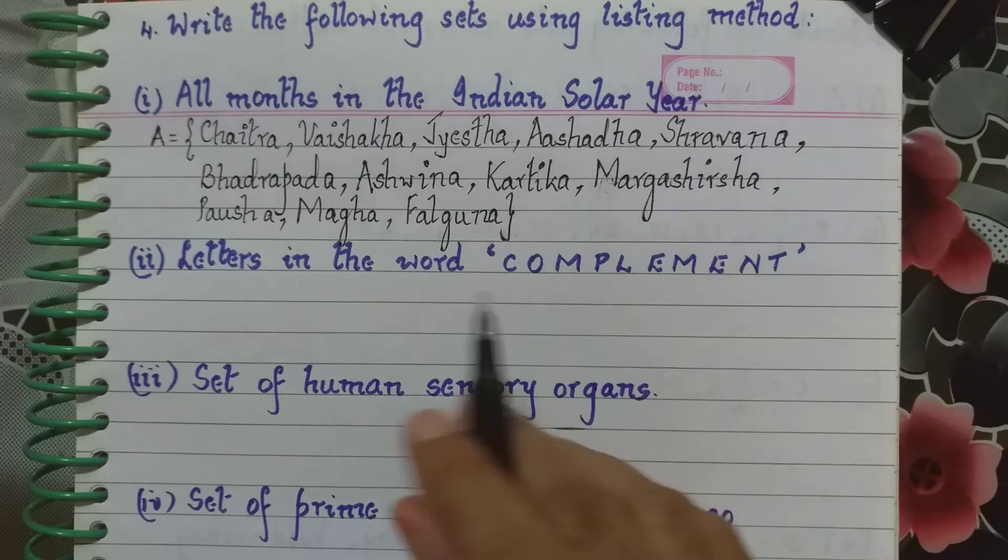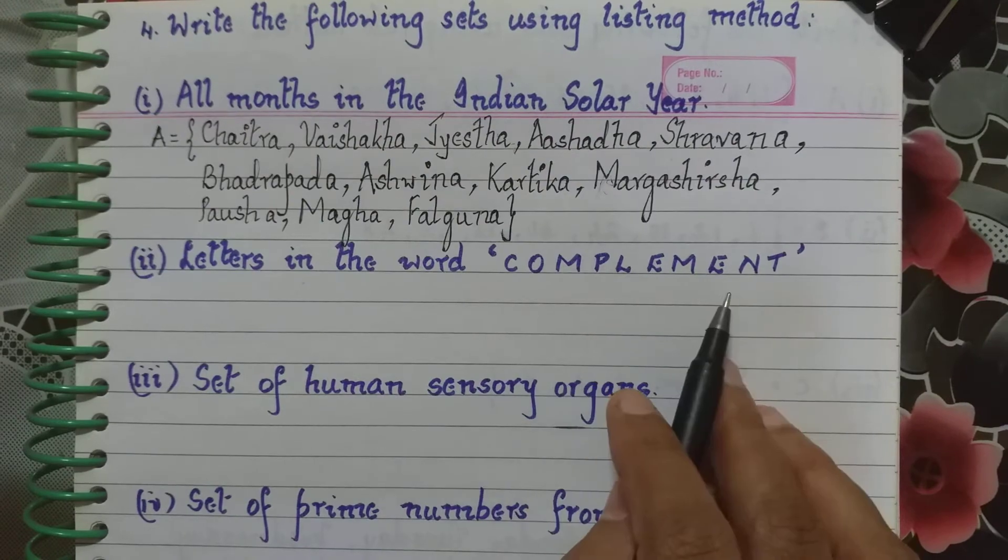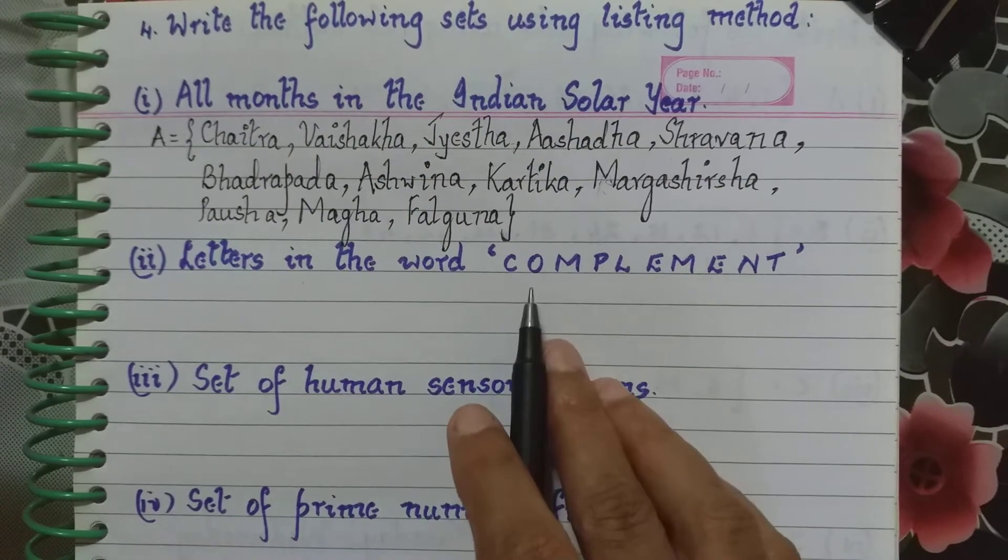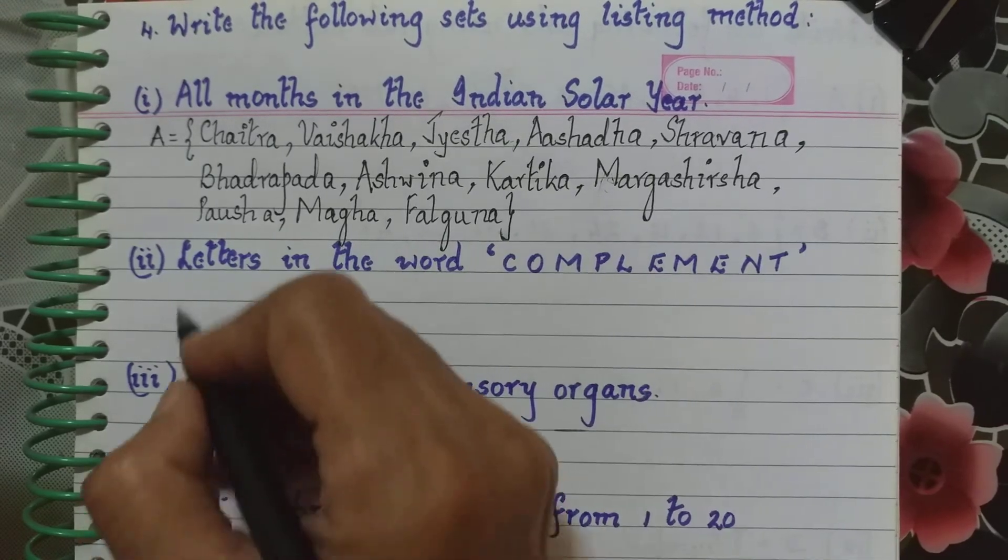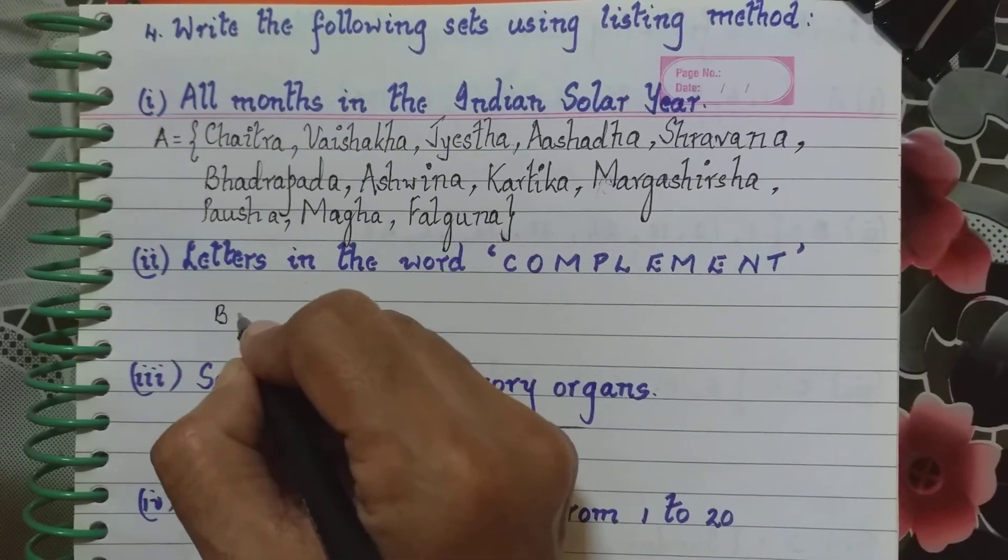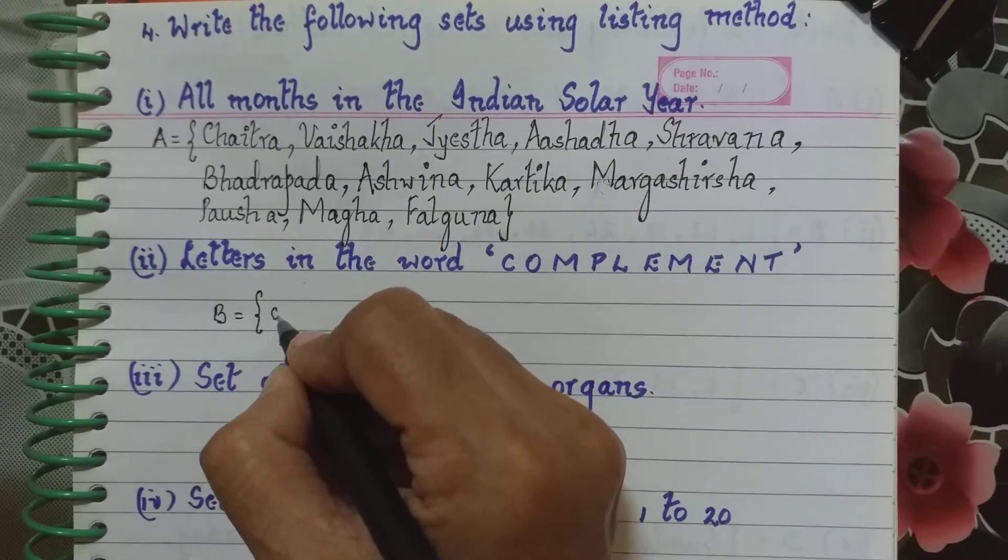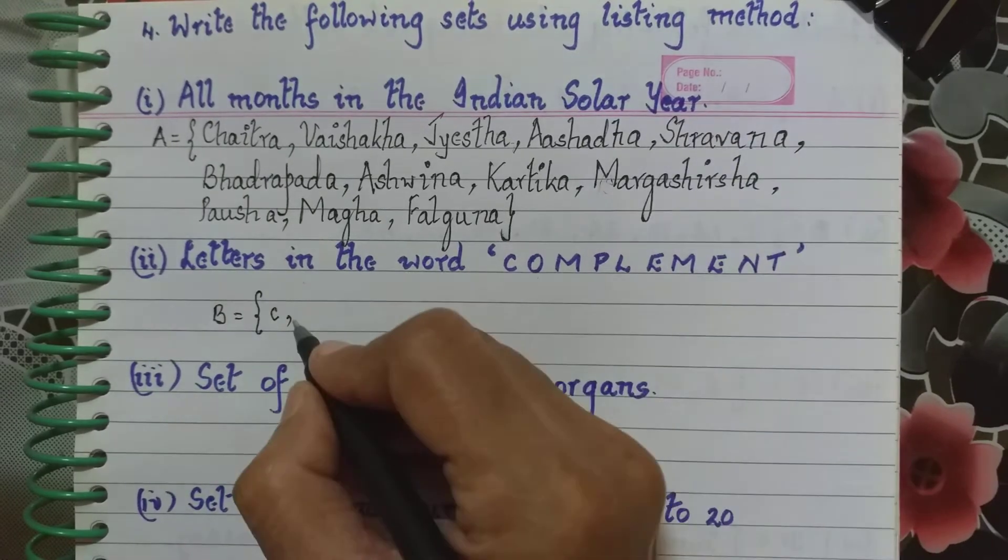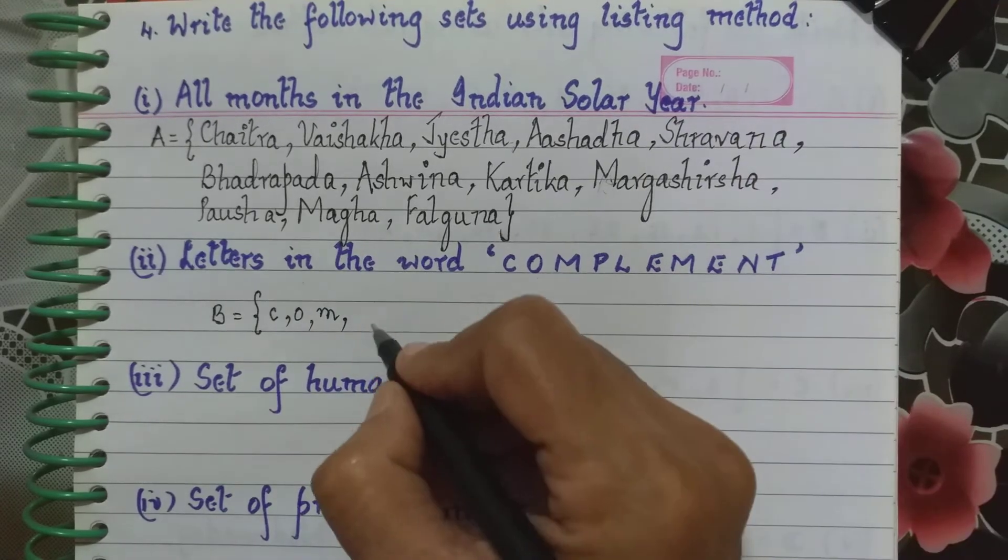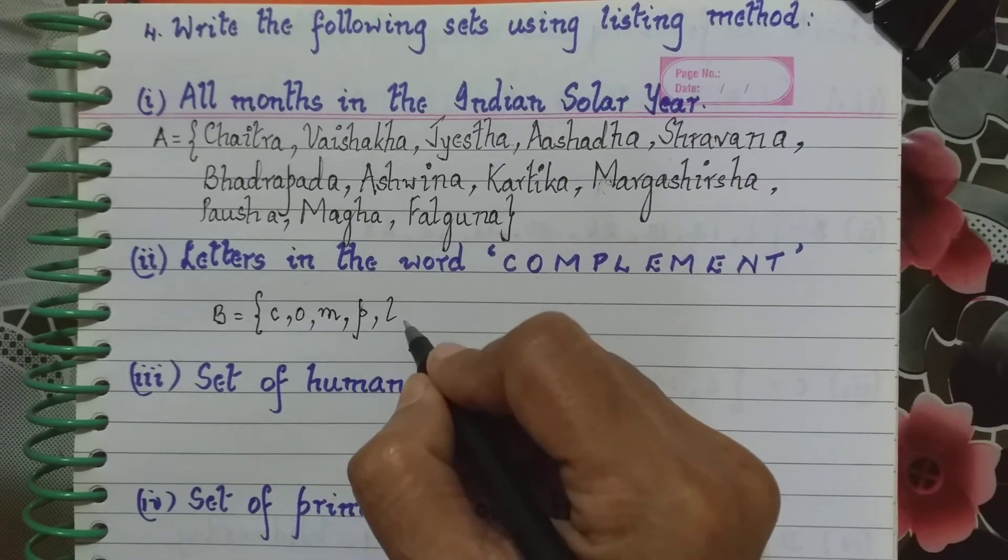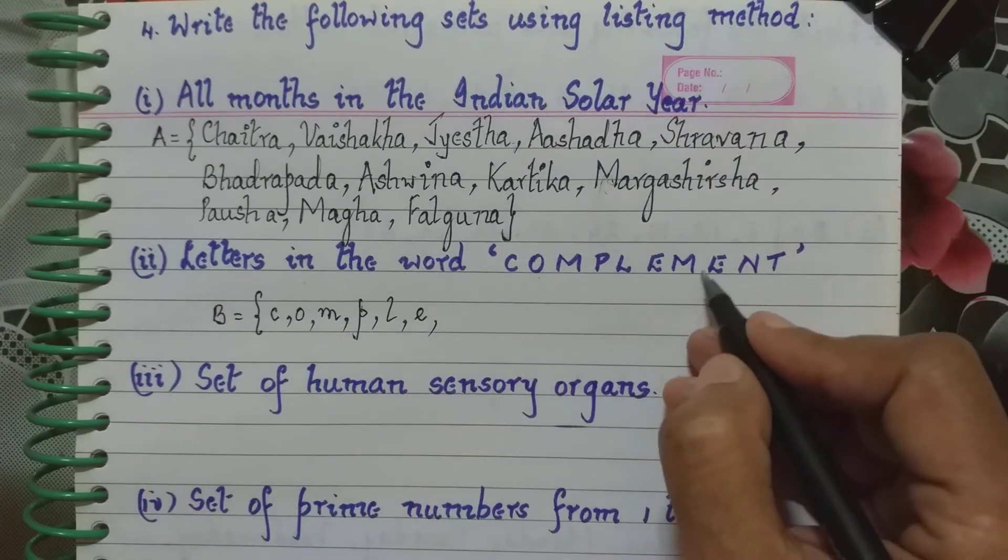So now going to the second one, the letters in the word complement. We are using listing method, so we have to list the elements in this, the letters in this word. So let us name the set first, say suppose we are naming it as B. Then we use curly brackets. We write first the small letter C, then we have O, then we have M, then we have P, then we have L, and E.